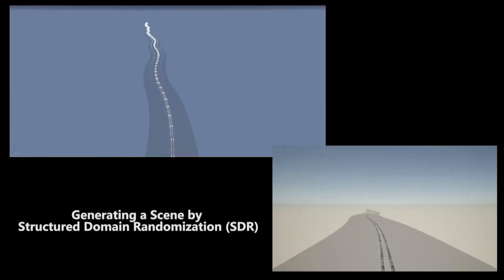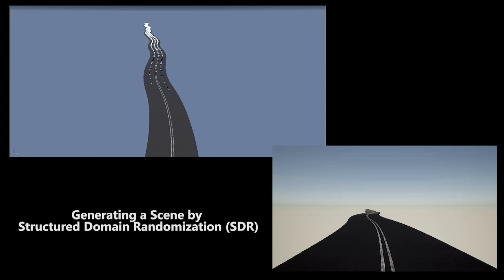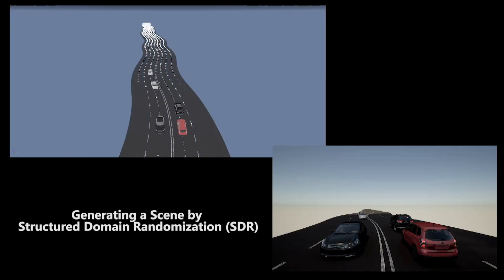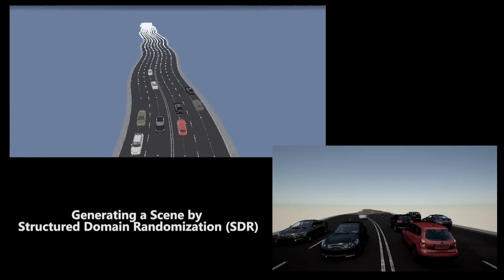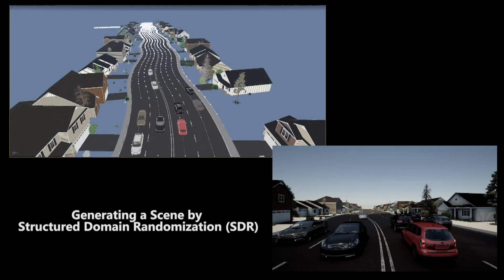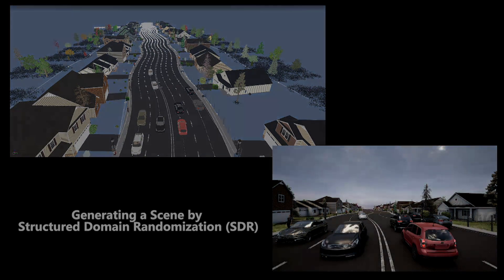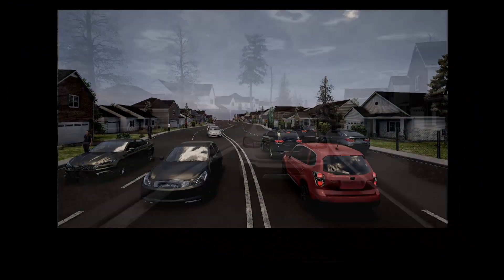Structured domain randomization is a generalized technique for procedurally generating synthetic random images that preserve the structure or context of the problem at hand. Images generated by SDR can be used to train a neural network for perception tasks such as object detection on real images.